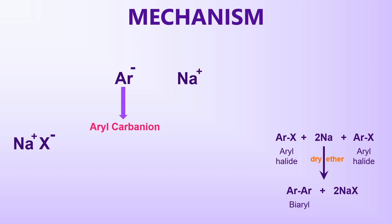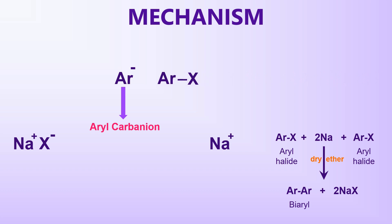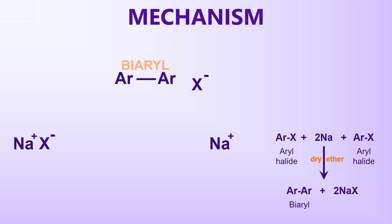The aryl carbanion, thus generated in the previous step, replaces the halide group in another aryl halide through nucleophilic substitution, resulting in the formation of a bi-aryl compound. This step follows second-order kinetics.